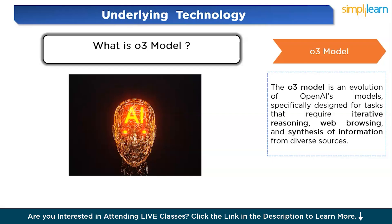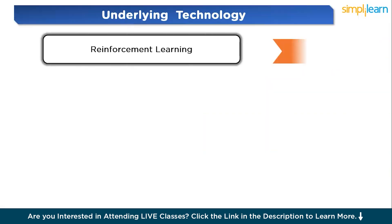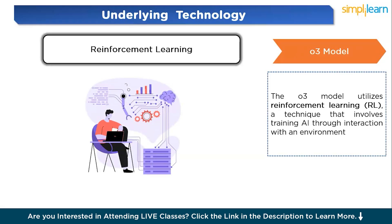The O3 model is an evolution of OpenAI's model, specifically designed for tasks that require iterative reasoning, web browsing, and synthesis of information from diverse sources. Unlike its predecessors, the O3 model is built to handle complex, multi-step research tasks where quick responses aren't sufficient. It is optimized for browsing the web to collect diverse data, synthesizing that data into coherent and structured output, cross-referencing information from various sources to ensure accuracy, and adapting to new information as it's gathered to improve the quality of output. This model is designed to handle the high demands of modern research, making it far more capable than simpler models that rely on pre-existing knowledge alone.